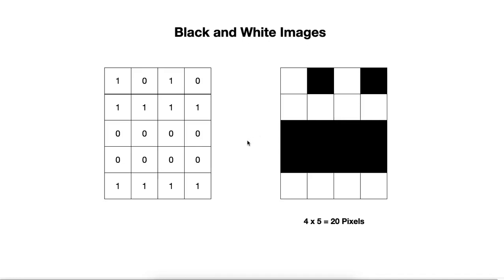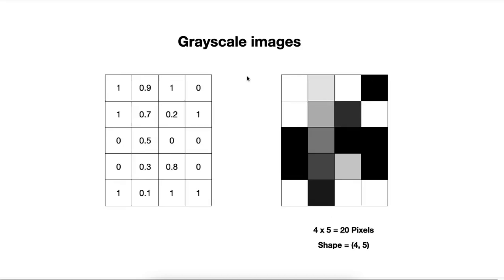This is the most basic type of images, where we have just black and white images. Another type is called grayscale images, where we have the intensities of black and white color. For example, if we are close to one, the color will be close to white. Here we have 0.9, which we can see is close to one. And as we go farther from one and closer to zero, it will be more darker. So we have here 0.7, which is darker than 0.9.